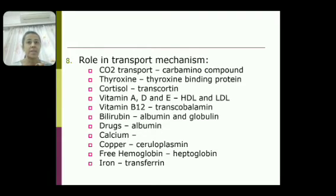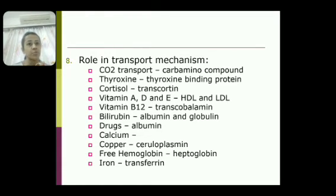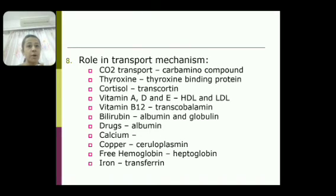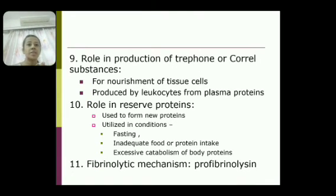Plasma proteins play an important role in transport mechanisms. Carbon dioxide is transported in bound form with amino acids of plasma proteins as carbamino compounds. Hormones like thyroxine are transported by thyroxine-binding globulin, and cortisol by transcortin. Vitamins A, D, and E are transported bound with plasma proteins like HDL and LDL. Vitamin B12 binds with transcobalamin, bilirubin binds with albumin and globulin, various drugs bind with albumin, calcium is transported in bound form, copper binds with ceruloplasmin, hemoglobin binds with haptoglobin, and iron forms transferrin.